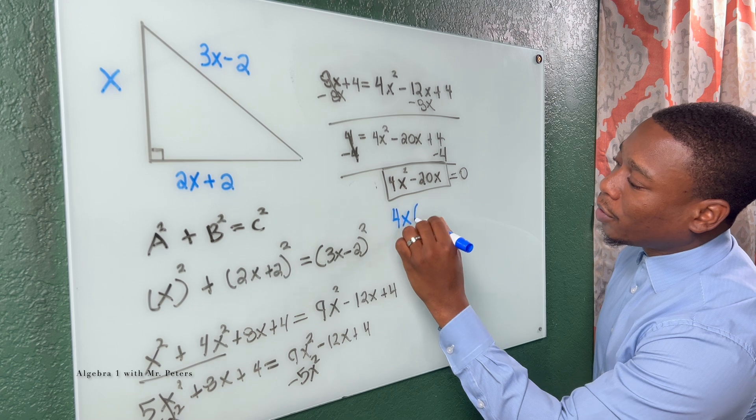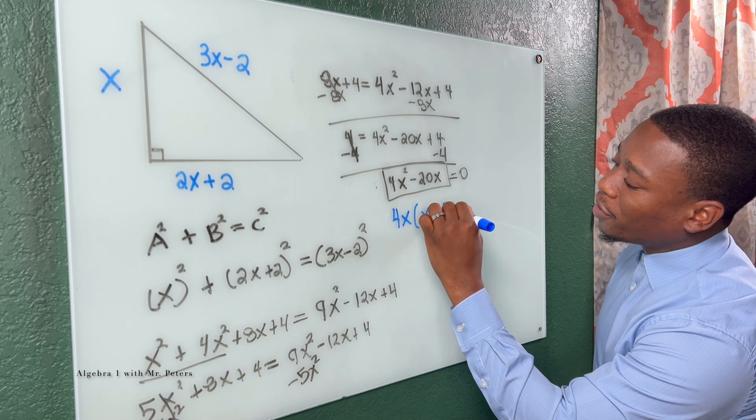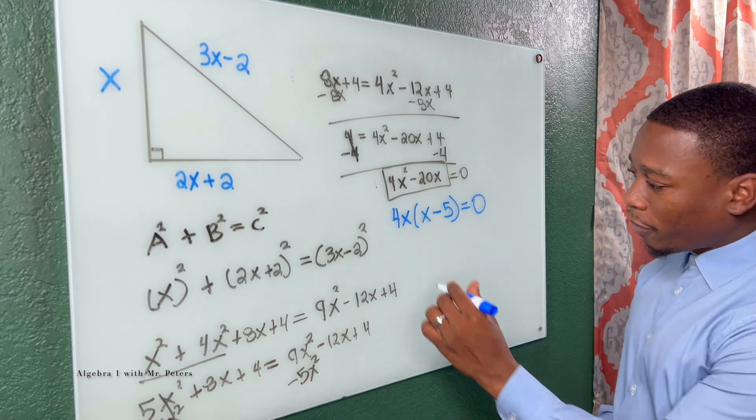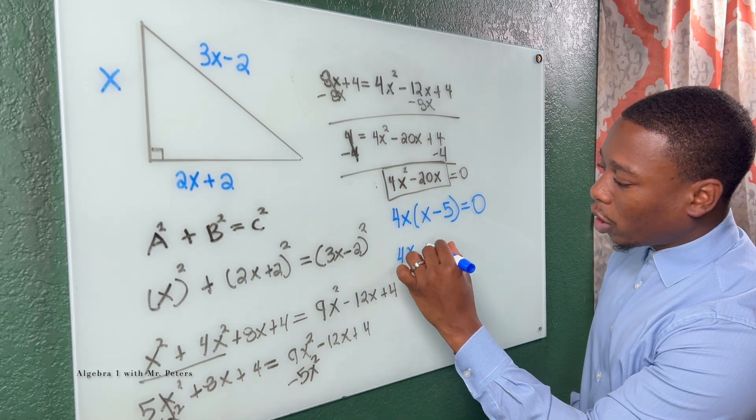So I'm going to take out a greatest common factor of 4X. Once I take that out, I'm going to have X minus 5 is equal to 0. So now we set both factors equal to 0 like a regular quadratic equation.